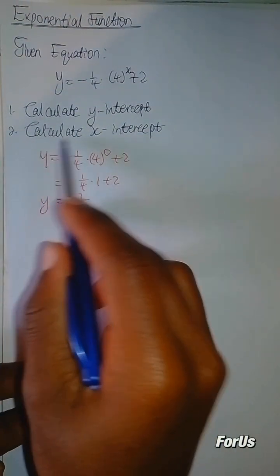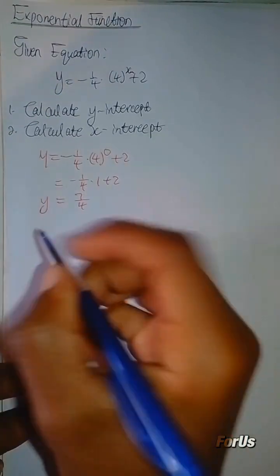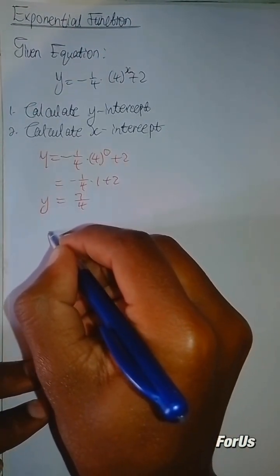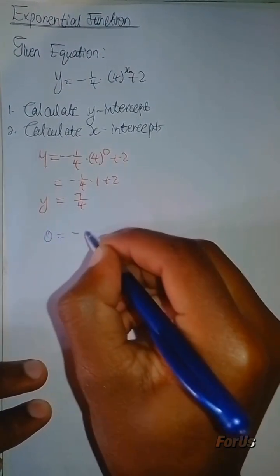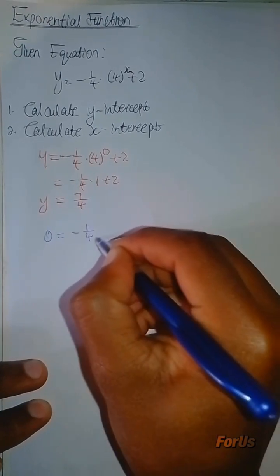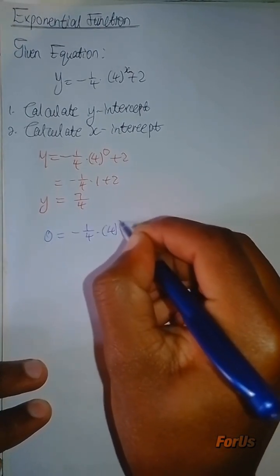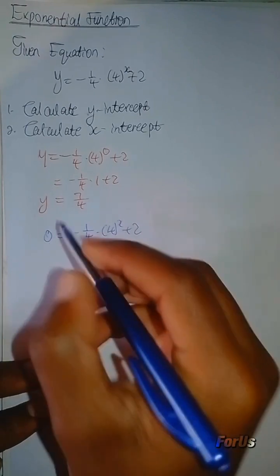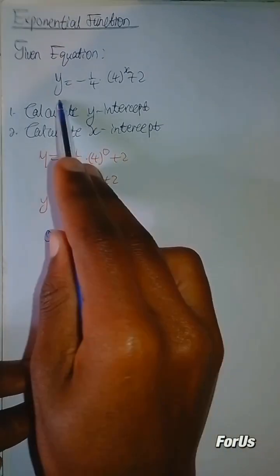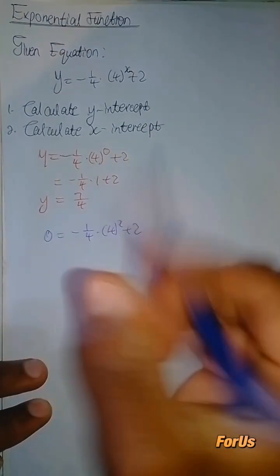Now, to find the x-intercept for number 2, you're going to say 0 is equal to negative 1 over 4. So 4 to the x plus 2, here we substitute 0 where we see y, since we want the x-intercept.